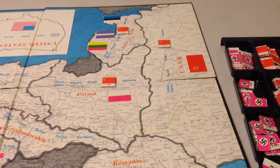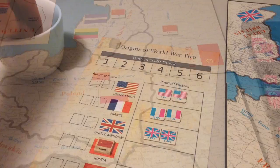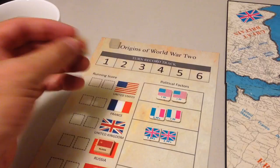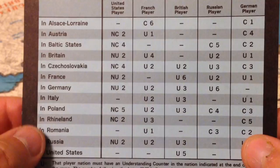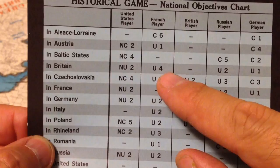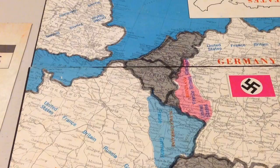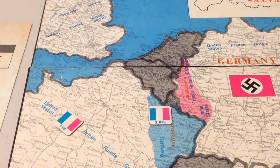The next power to place is France, which receives four political factors. Alsace-Lorraine is a big deal for France at six points, requiring control. France also has countries where it can earn a few points, including four if Britain establishes an understanding. Since four political factors is not enough to establish control anywhere, France places three in Alsace-Lorraine and one in its home country for future use.